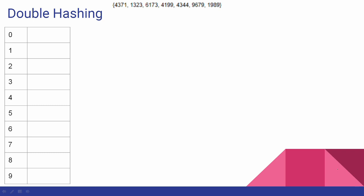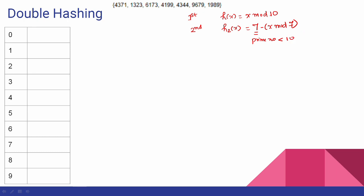Hi friends, this is the last video of the continuation of double hashing. Double hashing will be found in double hashing. One is h of x — that is the previous question. h1 of x is x mod 10. h2 of x is the second hash function. The second hash function is 7 minus x mod 7. The table size is 10, and the prime number less than 10 is 7.